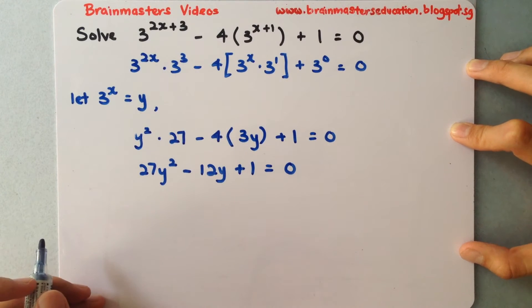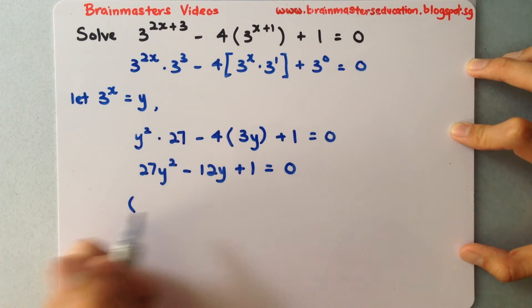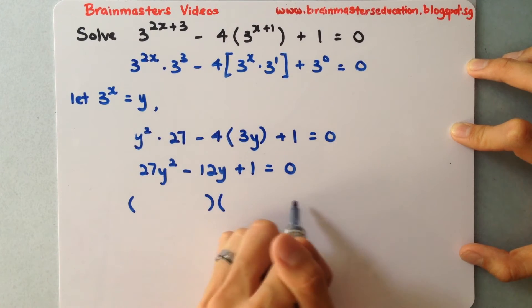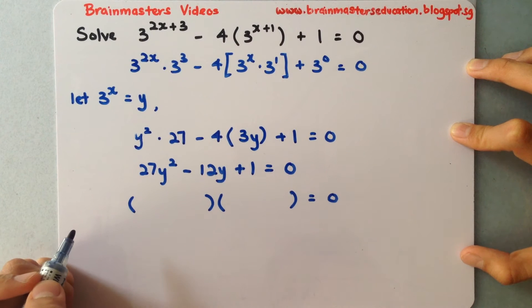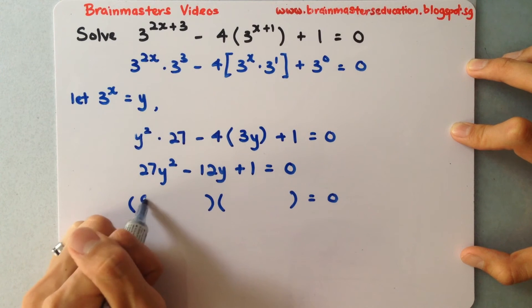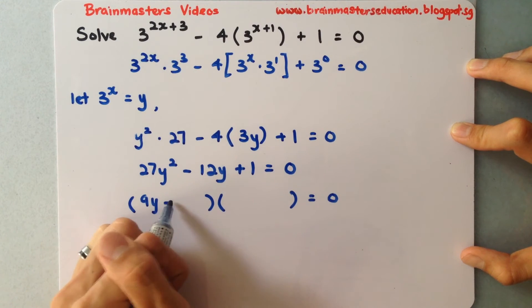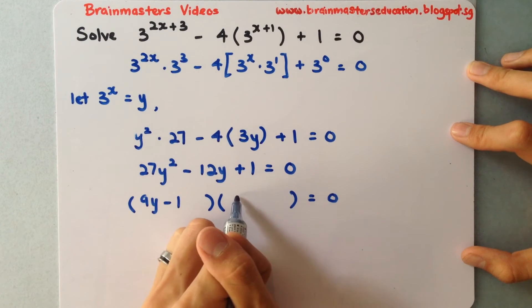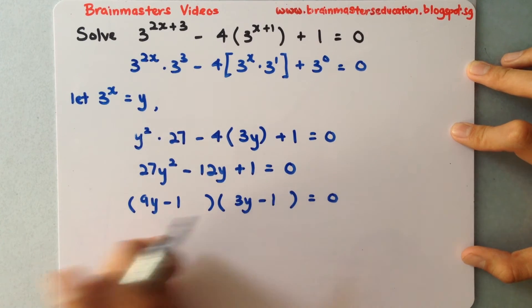Next I will factor this using the quadratic method. This gives me two brackets equals to 0: 9y minus 1 and 3y minus 1.